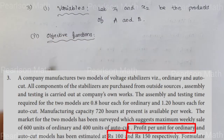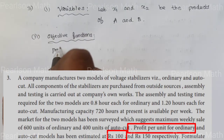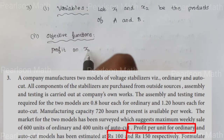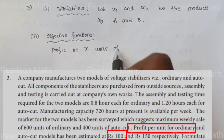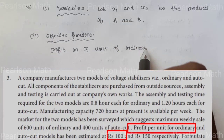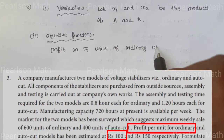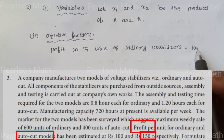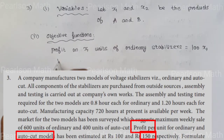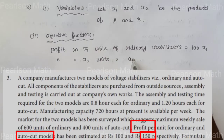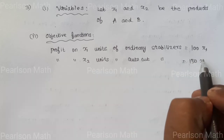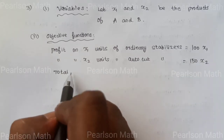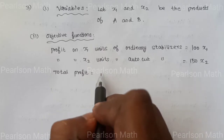The objective function: profit per unit for ordinary is Rs. 100 and for auto cut is Rs. 150. Profit on X1 units of ordinary stabilizer is 100X1, and profit on X2 units of auto cut stabilizer is 150X2. Total profit is 100X1 plus 150X2, which is to be maximized.